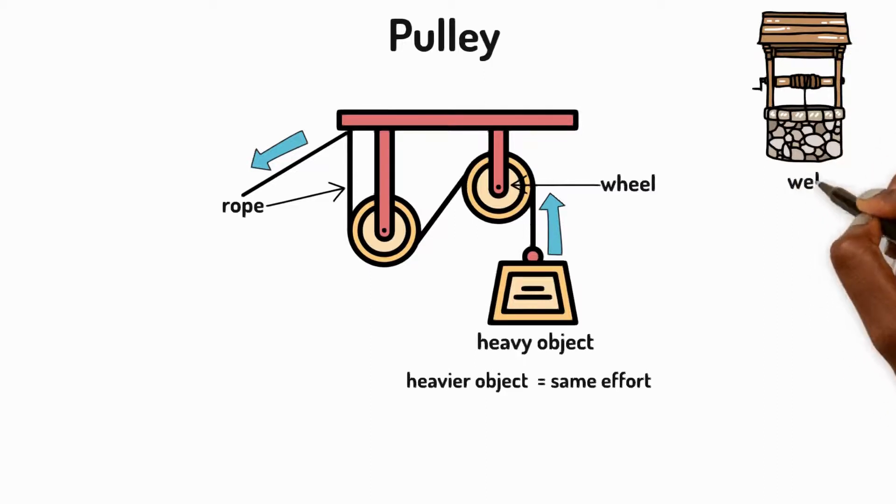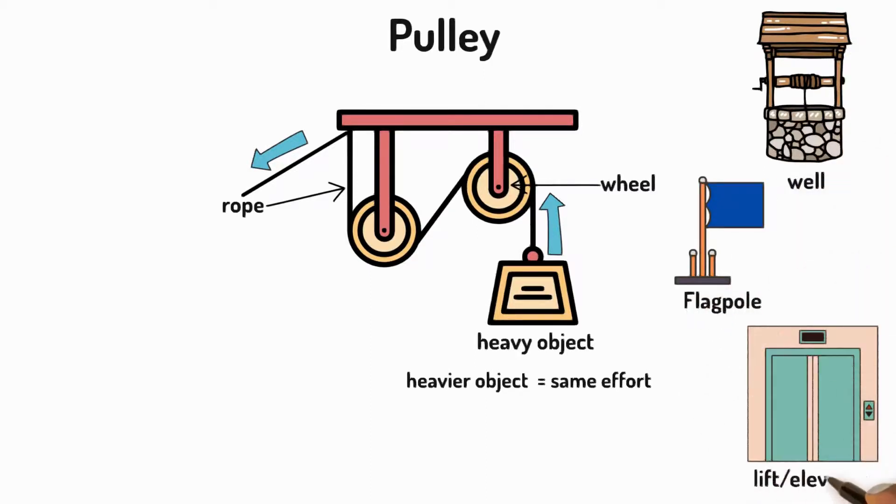A pulley can be used to lift water from a well, a flagpole, and also a lift or elevator use pulley systems too.